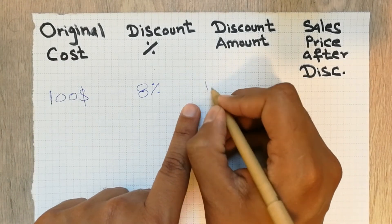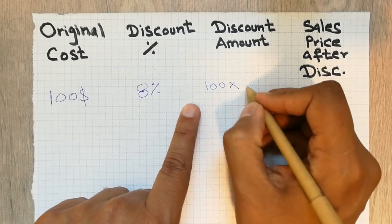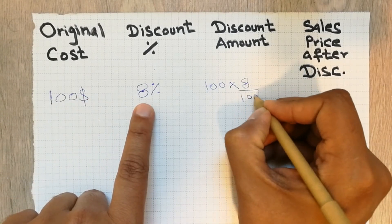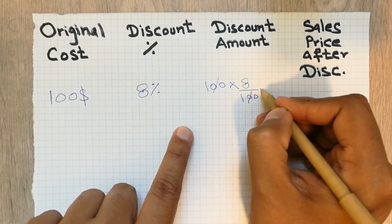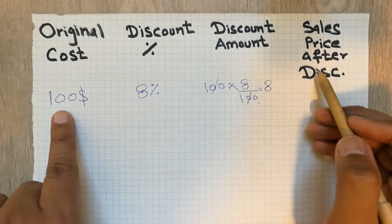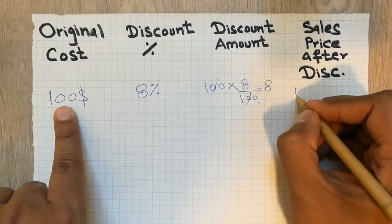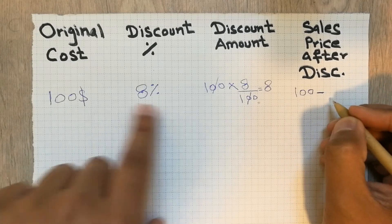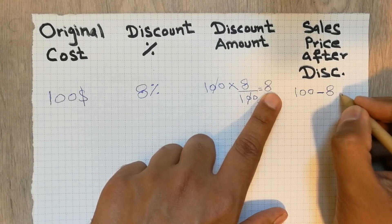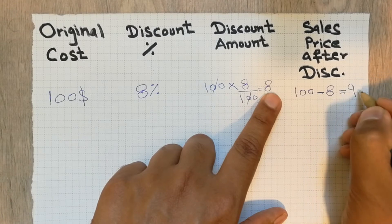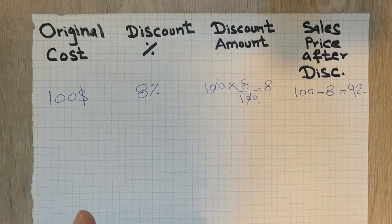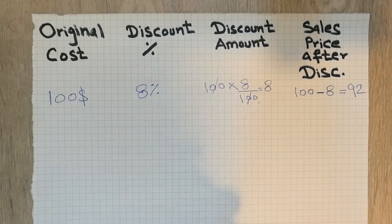So how can you calculate it? For the discount amount, you put the formula: 100 multiply by 8, then divide by 100 because of the percentage. So 100 cancels with 100 and the answer is 8. Now in the last step, to find out the sales price after discount, we take 100 minus 8, which equals 92. So after the 8% discount on that particular product, the answer is $92.